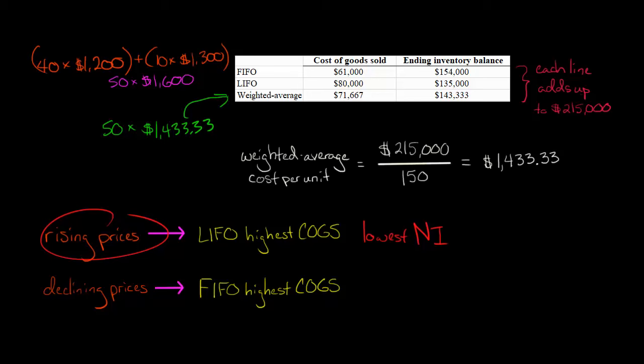But inflationary environment, rising prices, LIFO, highest cost of goods sold, lowest net income, and FIFO would be the reverse.